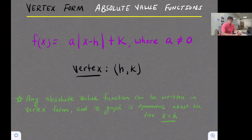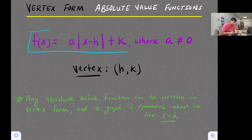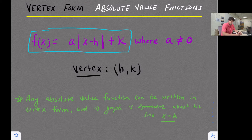In this video we're going to look at vertex form of absolute value functions. Our equation is f(x) = a times the absolute value of (x minus h) plus k. One thing to note: a can't be zero, because then this would just be a linear function. Remember, a is our stretch or shrink, and that's also where our reflection could be located if a is negative.